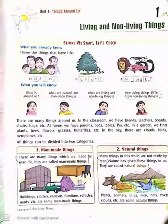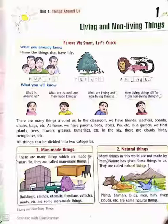Good morning everyone. In this video we will discuss the first chapter of EVS: living and non-living things. When you look around, you'll notice a number of things. If you sit in your classroom and look around, you'll see your friends, teachers, boats, chairs, bags, etc. At home you will see parents, beds, tables, TVs, etc. If you go out in your garden you will see plants, trees, flowers, grasses, butterflies, etc. And if you look up in the sky you'll notice clouds, birds, aeroplanes, etc.